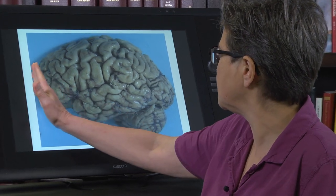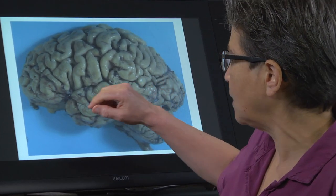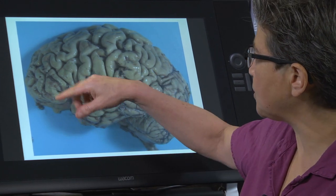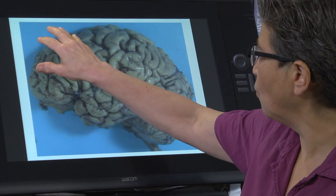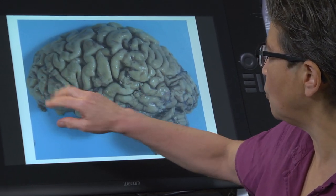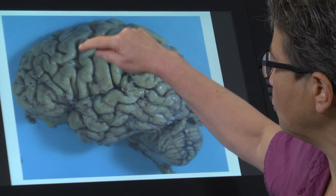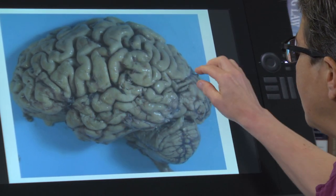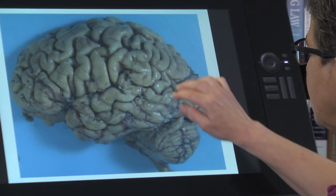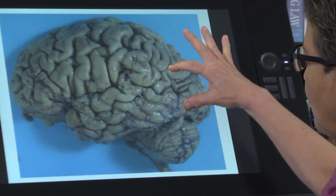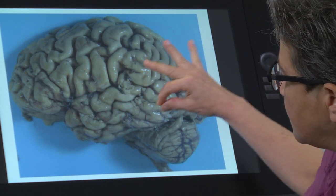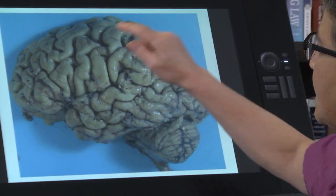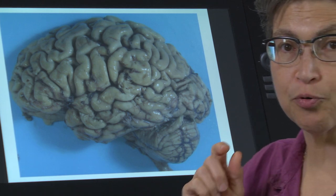This is the front, this is the back. We have four lobes that are obvious: the frontal lobe, separated by the central sulcus from the parietal lobe, and then back here is the occipital lobe, and coming down here is the temporal lobe.